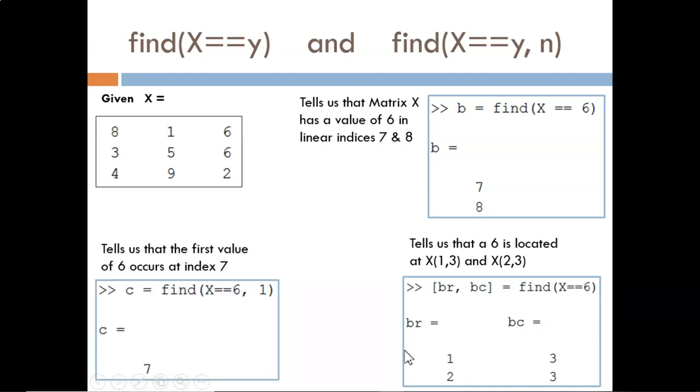Lastly, sometimes I don't want to know all the occurrences of a value. The second input argument to the find function tells MATLAB how many indices I want returned. In this example, I request just the first time that an X value is equivalent to 6. That happens to be at index 7, as we have seen before.